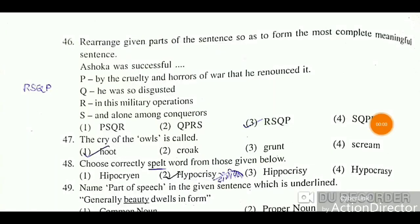The cry of the owls is called 'hoot' in English. The sound of a crow is 'croak', the sound of a bear is 'grunt', and the sound of a pig is 'scream'. For peacock, vulture, fox — their sounds in English need to be identified from the given options.